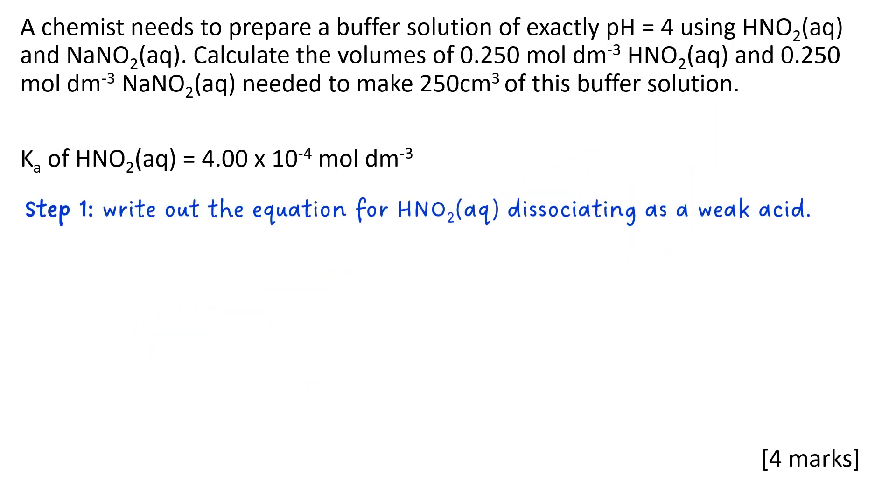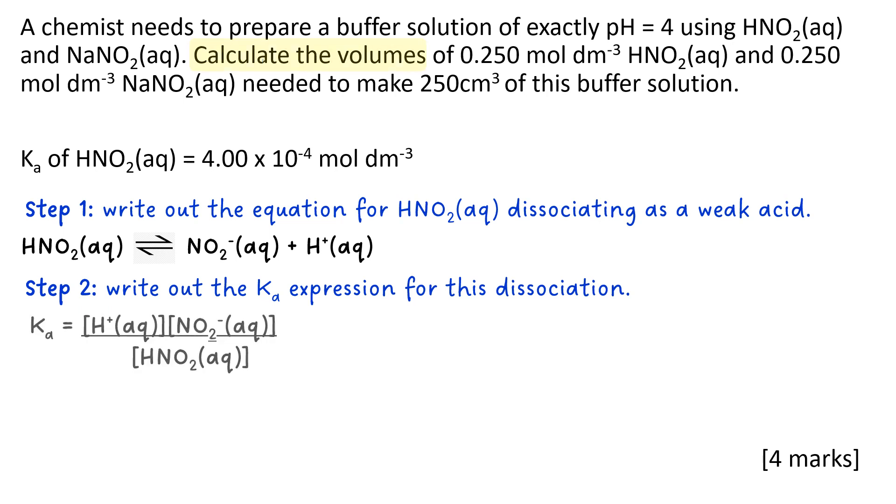The first step is to write out the equation for the acid dissociation. So HNO₂ is a weak acid. You know this because it's giving you the Ka value. So you can write out that equation. And now you can write the Ka expression for that dissociation like so.